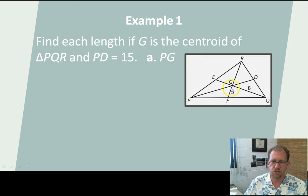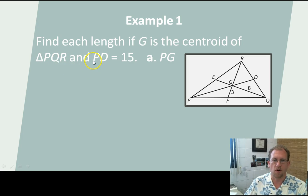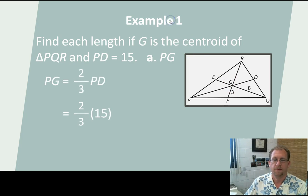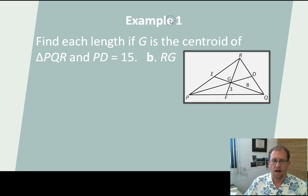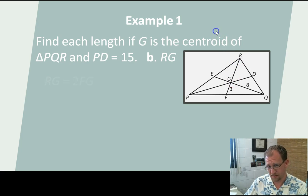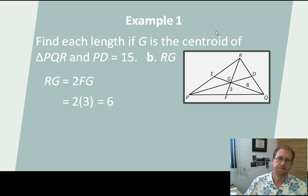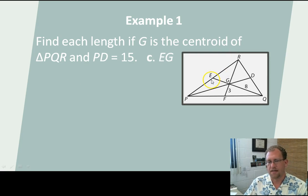Let's work through some examples. If point G is the centroid of triangle PQR and PD equals 15, then PG is two-thirds of that, so PG equals 10. Next, let's find RG: if GF is 3, then RG is twice that, so RG equals 6. Finally, let's find EG if GQ is 8 — since GQ is the shorter segment, EG is half of GQ, which is 4.